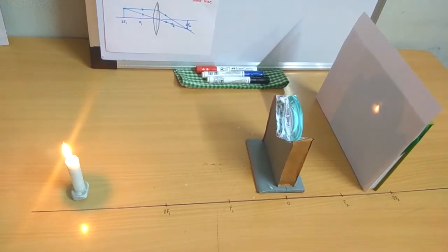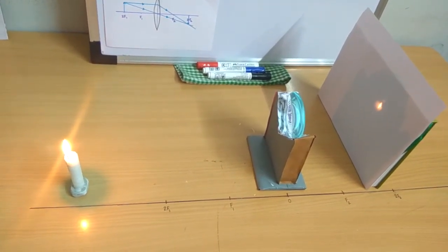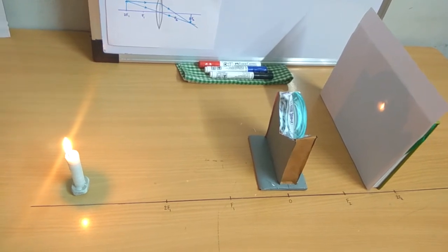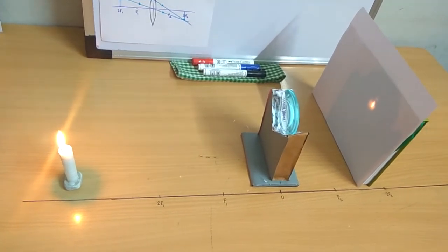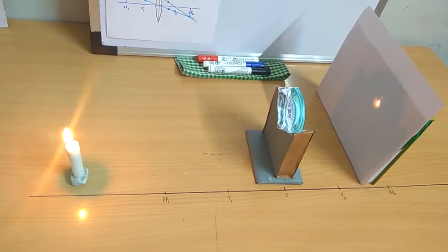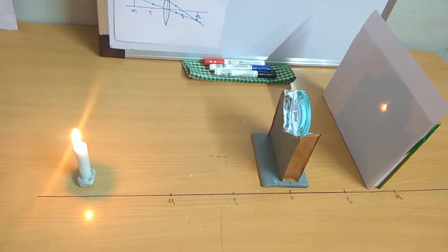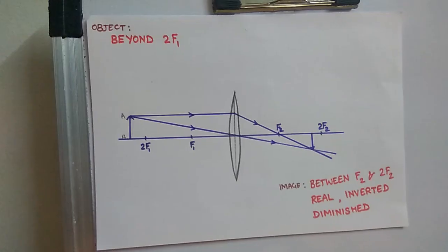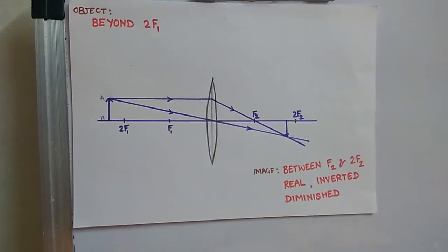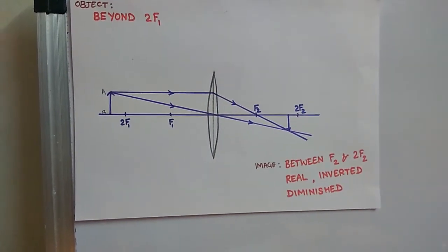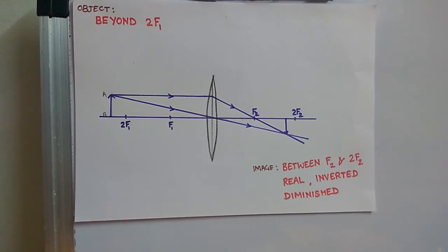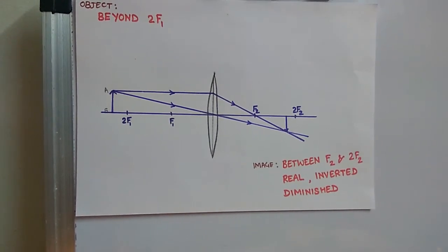In the third case, we are going to see when the object is beyond 2f1, where is the image formed? It is between f2 and 2f2, and it is smaller than the object. The image is diminished. This is the case when the object is beyond 2f1—the image is between f2 and 2f2, it is a real, inverted, and diminished image.